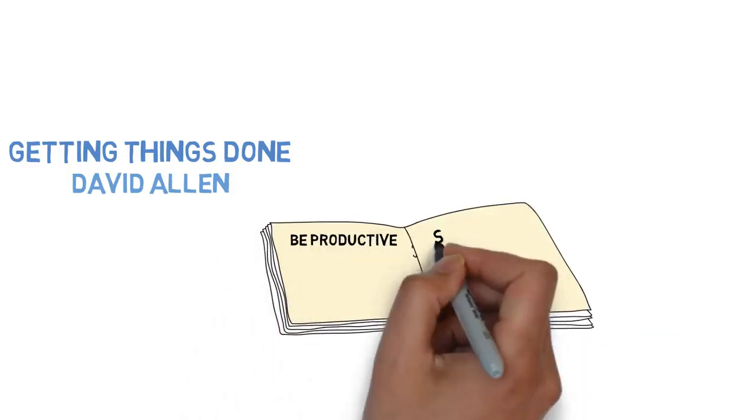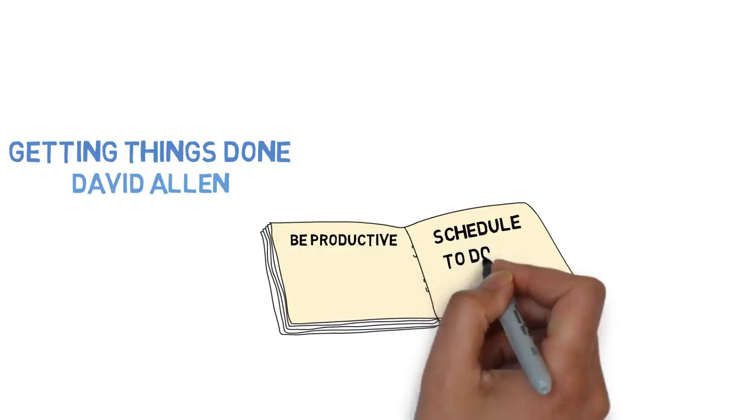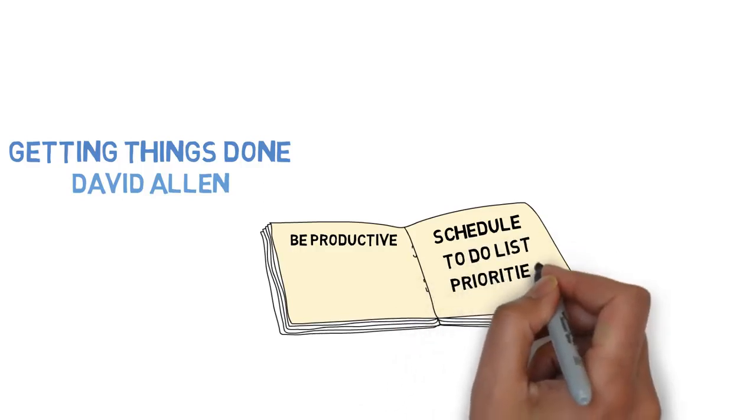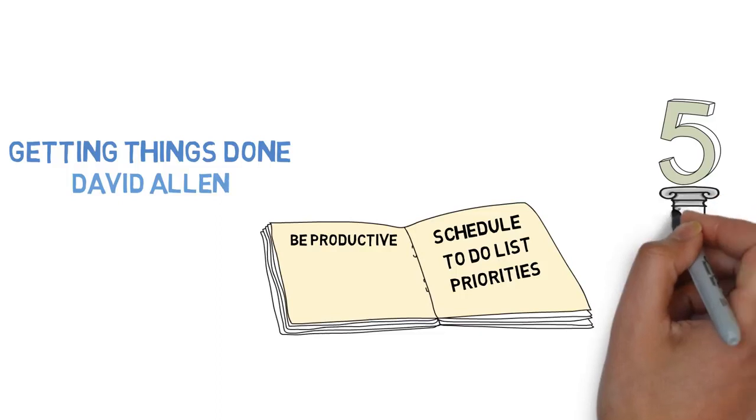It is a simple way of getting your schedule, to-do list, and priorities organized and manageable. Here are the five pillars on which GTD stands.